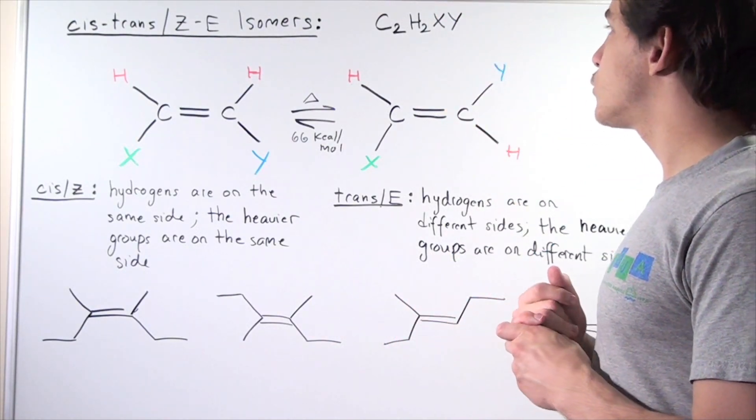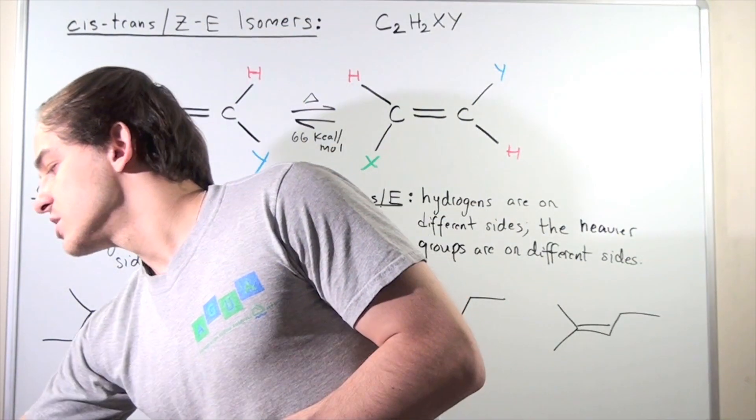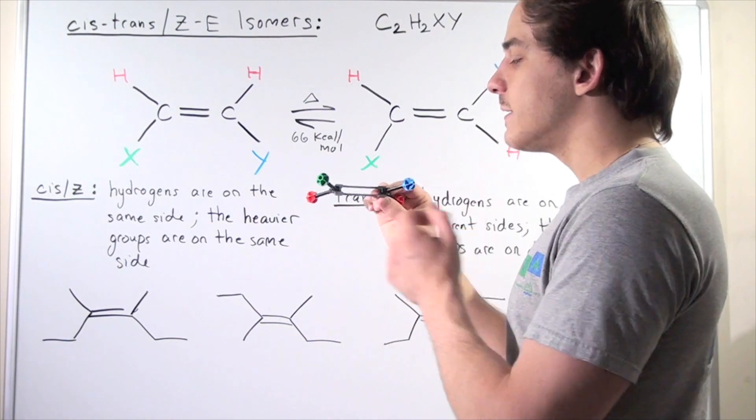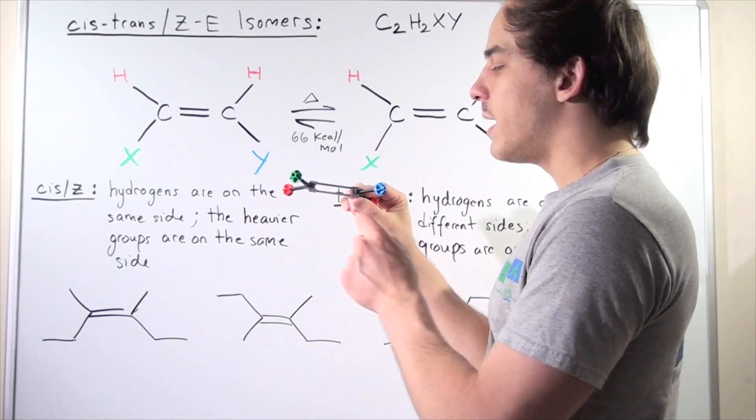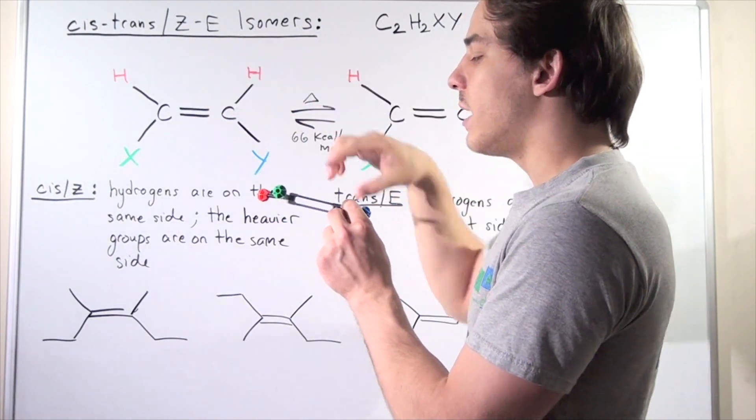Let's begin by trying to figure out the three-dimensional structure of this alkene. So alkenes have the following structure. We have a double bond. The lower bond is the sigma bond. The upper bond is our pi bond. So the lower bond, sigma, upper, pi bond.